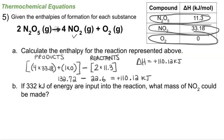Then part B says if 332 kilojoules of energy are input into the reaction, what mass of NO₂ (so it means grams) could be made? And so here I'm going to need some dimensional analysis.